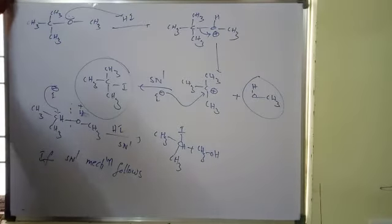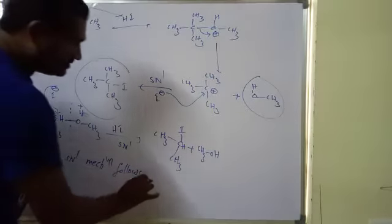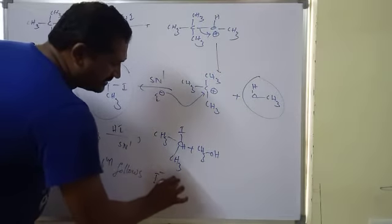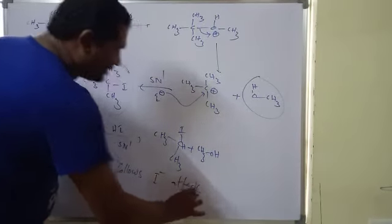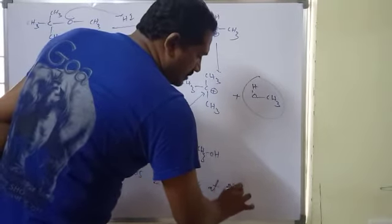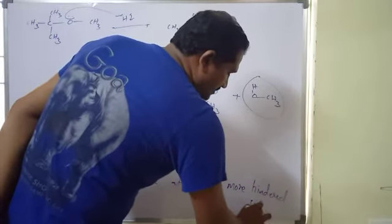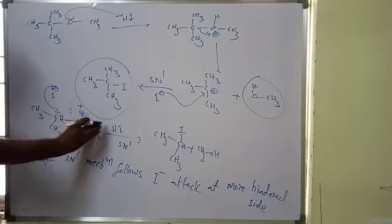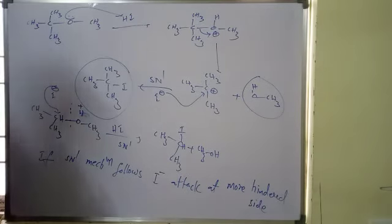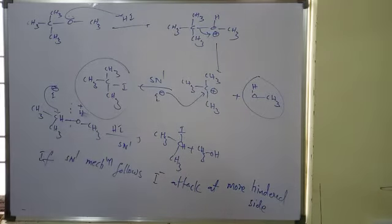Generally, when tertiary butyl group and isopropyl groups — bulky groups — are present, SN1 mechanism follows. In such case, if SN1 mechanism follows, I⁻ attacks the more hindered side and H attacks the less hindered side. This is the more hindered side, this is the less hindered side. This is the cleavage of ethers with HI.